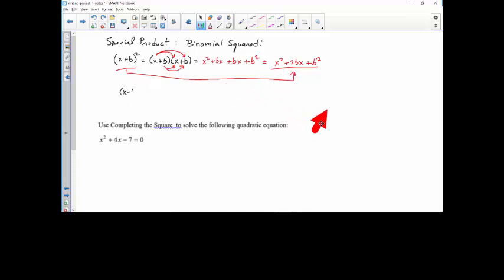And by the same token, x minus b quantity squared is x squared minus 2bx plus b squared.